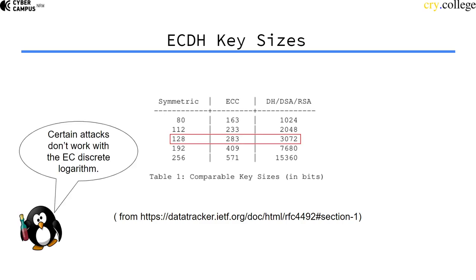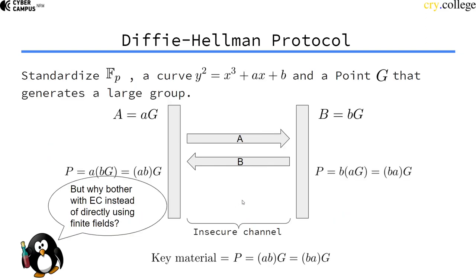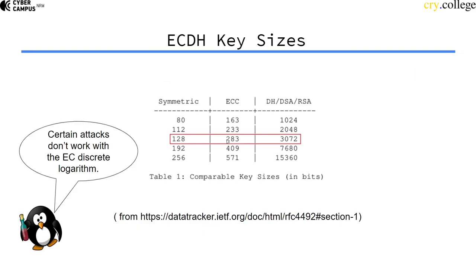With elliptic curve crypto, you can just have much smaller keys. So, this value that is transmitted here is much smaller than if you would have used it with finite fields. So, that's it.